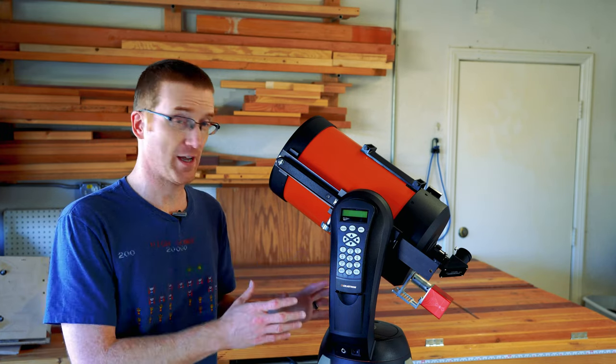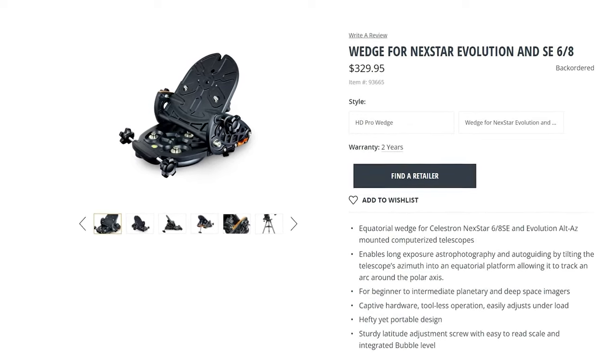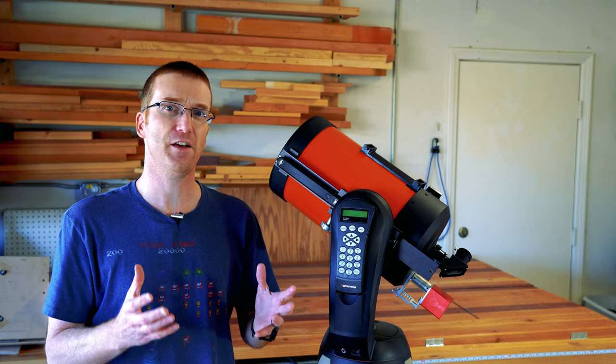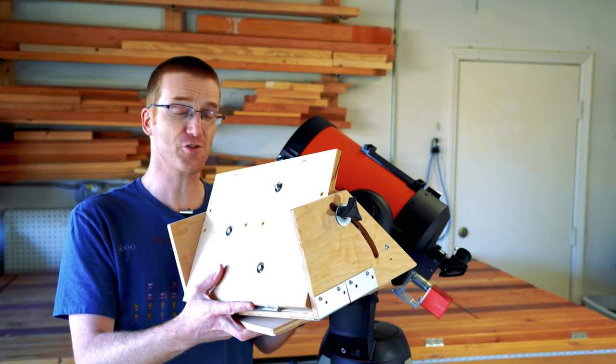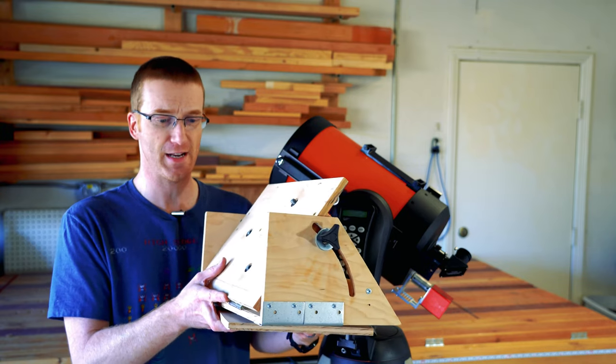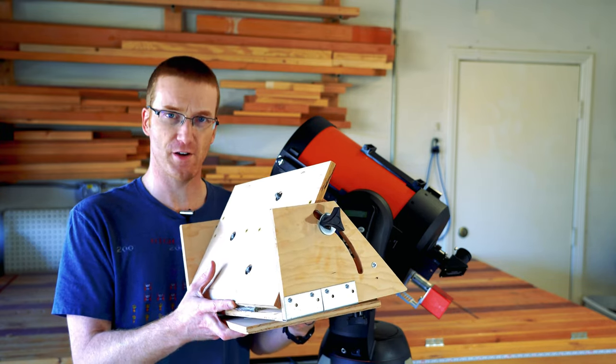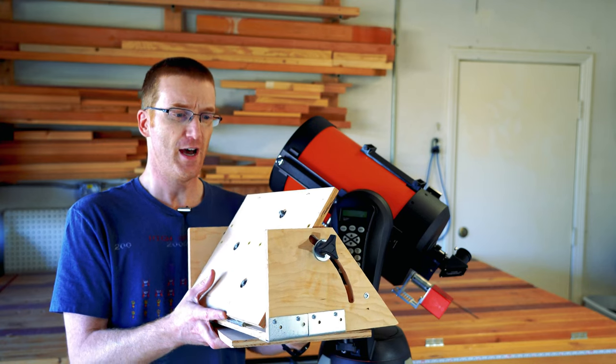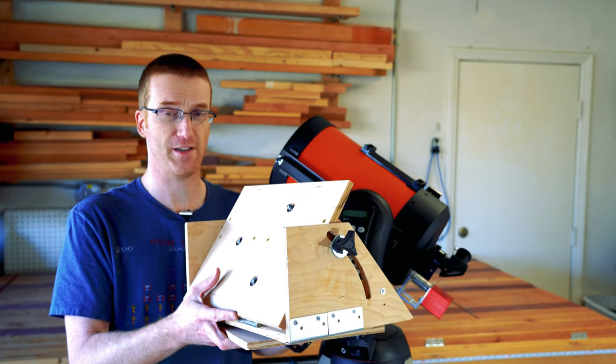Celestron makes a wedge for this telescope, but it costs like three hundred dollars, which was still a lot of money. So I decided to see if I could make my own. So what I came up with is this, and it actually works really well. It's just made out of some plywood and some other parts, and it cost me about thirty dollars to put together. So I'm going to show you how it works and give you some tips on how to make your own, if you want to give it a shot.